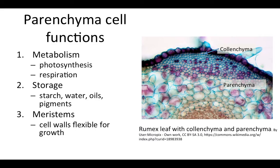Let's talk about the function of parenchyma cells. Parenchyma does a few different things. First, it is the most metabolically active cell type of the three. It is where photosynthesis occurs, where most respiration occurs, and where most substances are synthesized. It is also used for storage. Some examples of things that could be stored in parenchyma include starch, water, oils, and pigments. Meristematic cells are also initially parenchyma. Meristematic cells are the cells that divide and then expand to create the cells that make up the plant's body. Because they need to be able to expand, they can't have already thickened cell walls, so they need to start as parenchyma. Some of them may later differentiate into the other two types.